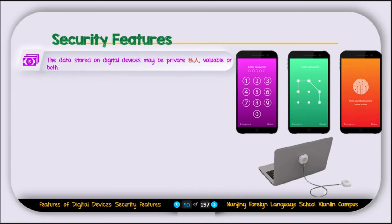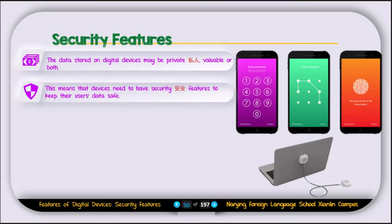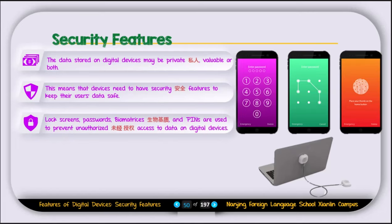The next feature is security. The data stored on a digital device may be private, valuable, or both. For example, a company boss's phone may contain very important business data — if someone gains access, they can cause serious harm. Devices need security features to protect user data. We can use face ID, a PIN, or fingerprints to protect our data. Lock screen passwords, biometrics, and PINs are used to prevent unauthorized access to data on the device.